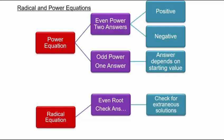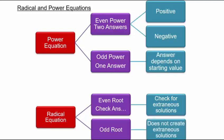When you raise both sides to an even power, you lose some information — positive or negative — so please check your answers. If you have odd roots like cube root of x equals 2, then when you cube both sides you get x equals 8. You only end up with one answer, and usually there are no extraneous solutions. But it's a good idea to check your answers no matter what, just to make sure you solved the equation correctly.